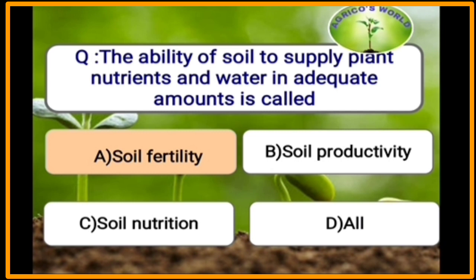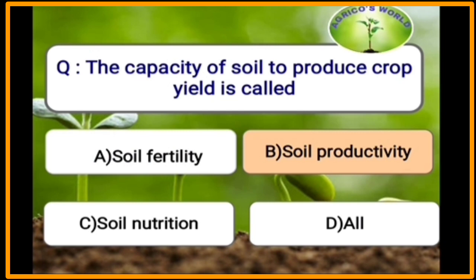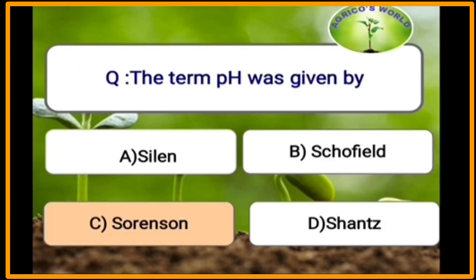The ability of soil to supply plant nutrients and water in adequate amounts is called soil fertility. The capacity of soil to produce crop yield is called soil productivity, and it is expressed in yield per hectare. We should remember that all fertile soils are not productive, but all productive soils are fertile.